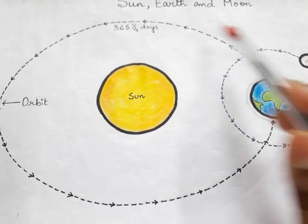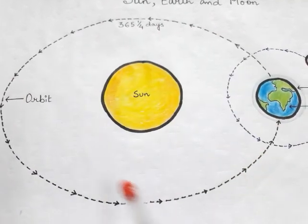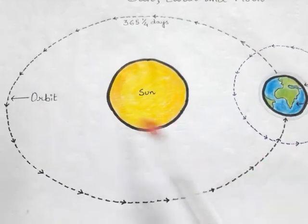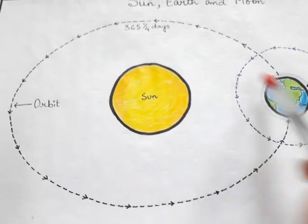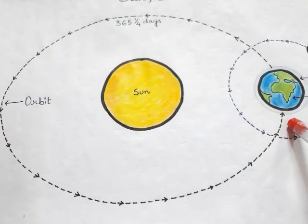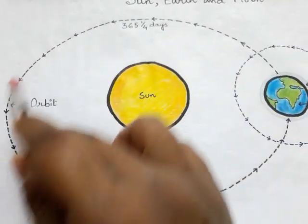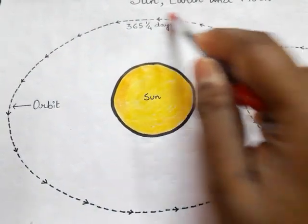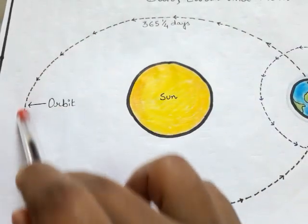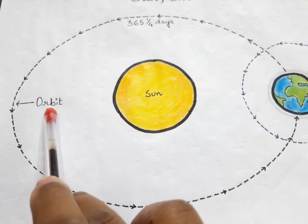The Earth moves around the Sun on an imaginary path called orbit. There is no actual line — we imagine a path on which Earth revolves around the Sun, and we call that imaginary line or imaginary path the orbit.